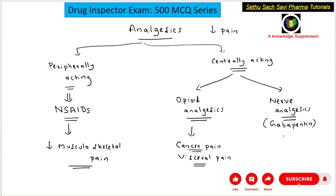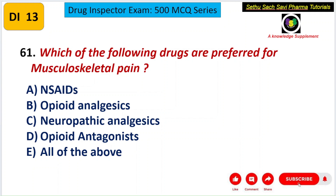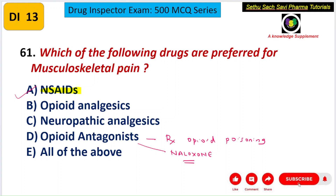Nerve analgesics are given for neuropathic pain — GABA-related drugs are the drug of choice. So the answer for musculoskeletal pain is NSAIDs, choice A. Opioid antagonists are given in the treatment of opioid poisoning — when morphine-like poisoning occurs, you give antidotes like naloxone. Naloxone is an opioid antagonist and the drug of choice for opioid poisoning. The correct answer is choice A, NSAIDs.